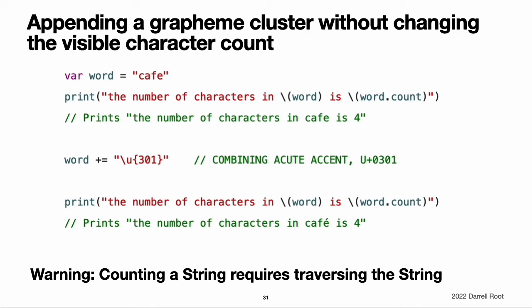Note: extended grapheme clusters can be composed of multiple Unicode scalars. This means that different characters and different representations of the same character can require different amounts of memory to store. Because of this, characters in Swift do not each take up the same amount of memory within a string's representation. As a result, the number of characters in a string cannot be calculated without iterating through the string to determine its extended grapheme cluster boundaries. If you are working with particularly long string values, be aware the count property must iterate over the Unicode scalars in the entire string. The count of characters returned by the count property is not always the same as the length property of an NSString that contains the same characters. The length of an NSString is based on the number of 16-bit code units within the string's UTF-16 representation, not the number of Unicode extended grapheme clusters.